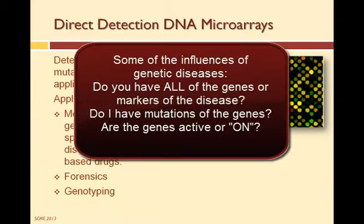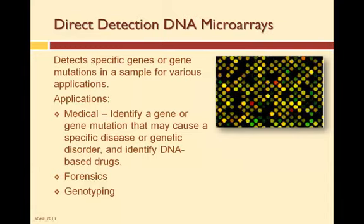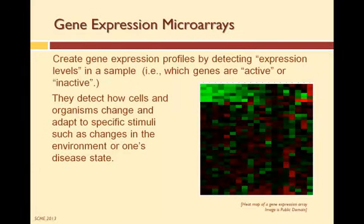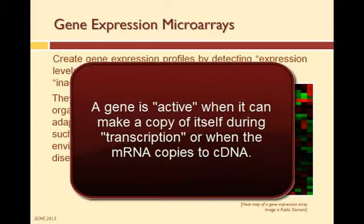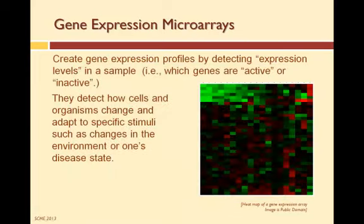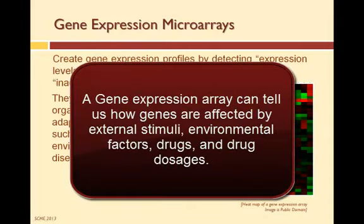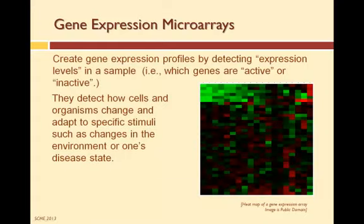Researchers have found that most genetic diseases are influenced by many different genes, gene mutations, and gene activity. So how do we identify gene activity? We use a gene expression microarray. Gene expression microarrays detect the expression levels in a sample — in other words, which genes are active and which genes are not active in the sample being tested. A gene is said to be active when it can make a copy of itself, which happens during transcription when an mRNA copies the DNA. In gene expression arrays, one can see how genes are affected or changed due to some external stimuli, such as environmental factors, a drug, or a change in drug dosage. The arrays compare the before and after effects of the stimulus on one's genes.